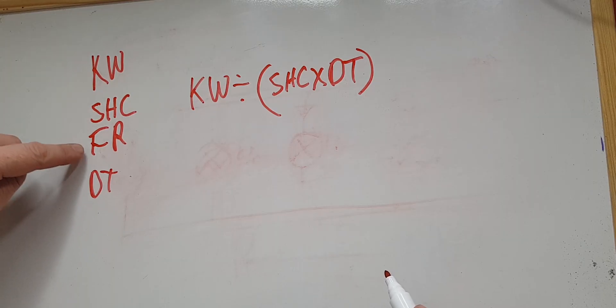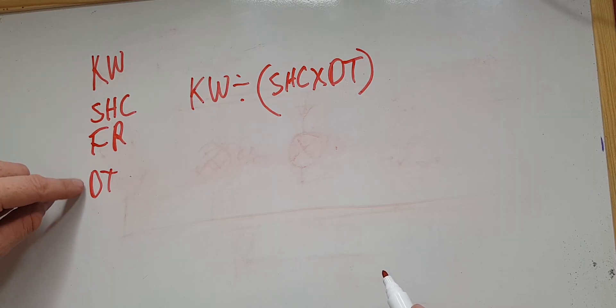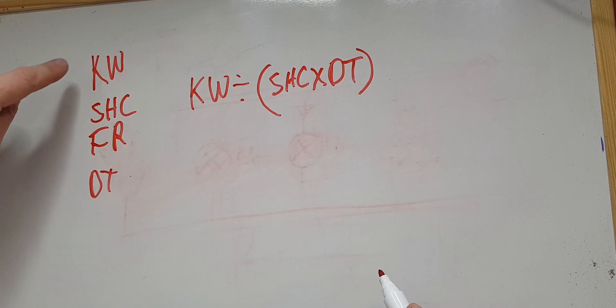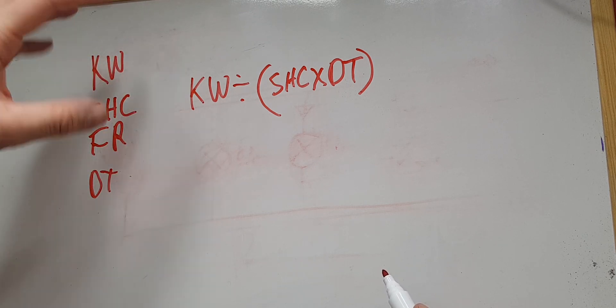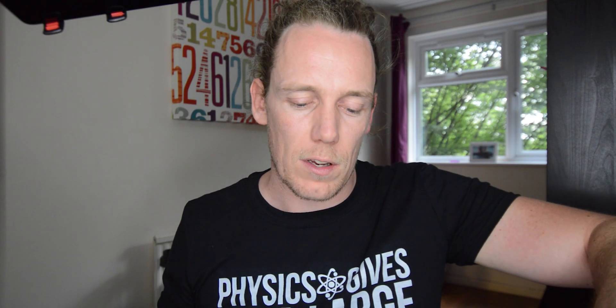So as I say, these three are generally fixed, this one can be variable, and that can also be variable. You can turn this lots of ways around, which we'll go into.